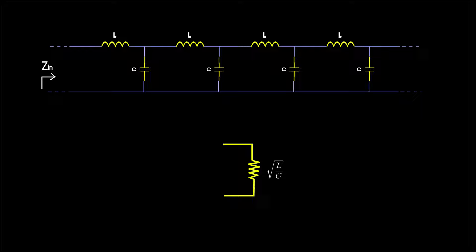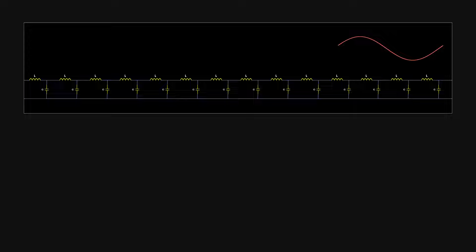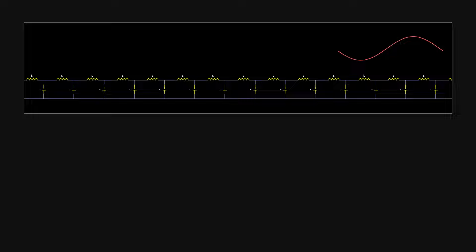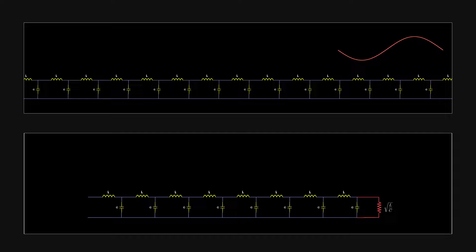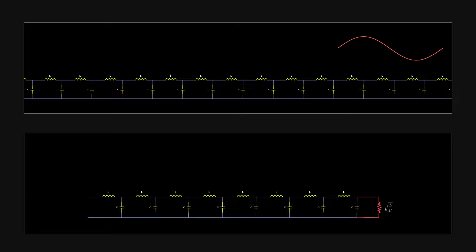We have two scenarios here. If the line is infinite, the signal will travel through it indefinitely. It is dissipated from the generator's perspective. If the line is terminated by resistance equal to the characteristic impedance, the signal travels through the wire and gets dissipated in the load. In both cases, the generator feels like it's injecting the signal to a resistance equal to the characteristic impedance.